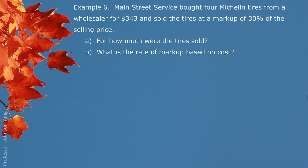Example 6: Main Street Service bought four Michelin tires from a wholesaler for $343 and sold the tires at a markup of 30% of the selling price. Part A, for how much were the tires sold? Part B, what is the written markup based on cost?